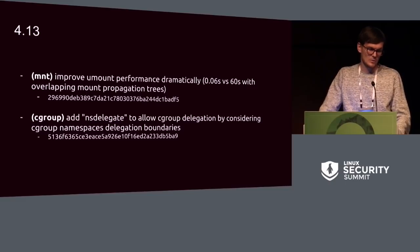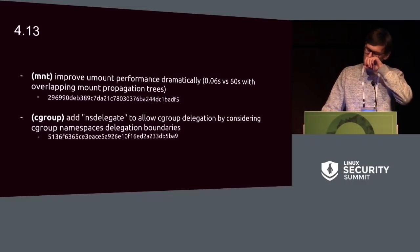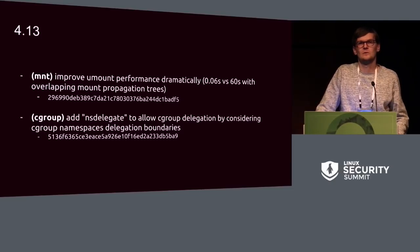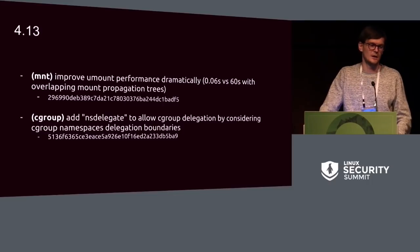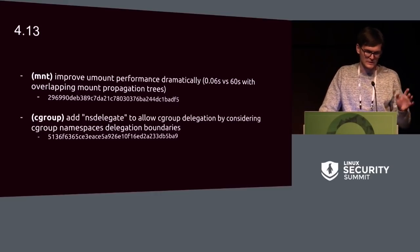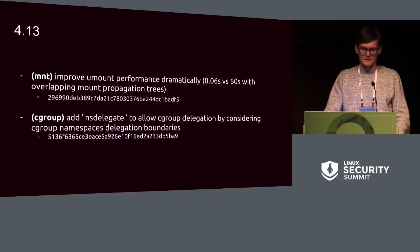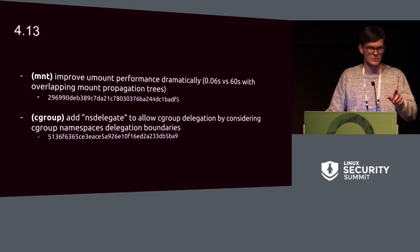4.13 saw Eric fix bad umount performance — actually a bug fix that dramatically increased umount performance. If you had overlapping mount propagation trees, the old umount code could take up to 60 seconds; Eric refactored the whole umount logic so it takes down to 0.06 seconds. Also in 4.13, Tejun added an nsdelegate option to allow safe cgroup delegation. It was always kind of safe for unprivileged users if the admin set it up correctly, but not safe for the root user. With nsdelegate, cgroup namespaces are considered delegation boundaries so you cannot escape limits.